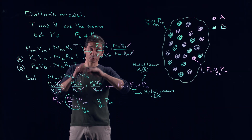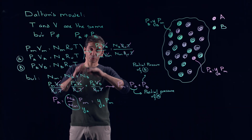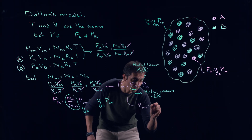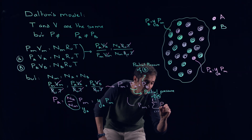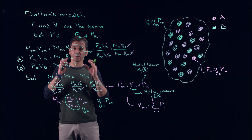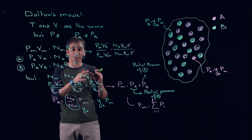We can generalize this: P_M equals the summation from i = 1 to K of all the partial pressures of all components from 1 to K. In practice, this means that when you measure the pressure of your mixture, it is the sum of the partial pressure of each component.